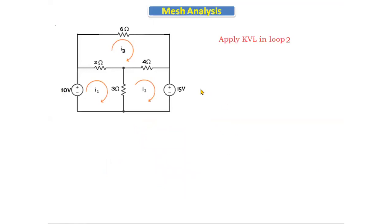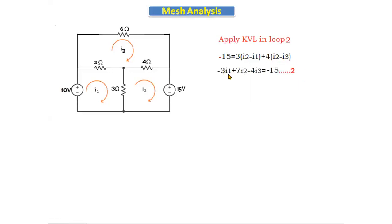Applying KVL in loop two: there is one voltage source, and current enters from the positive terminal, so −15. The 3Ω resistor is common to loops one and two, giving 3·(I2 − I1); the 4Ω resistor is common to loops two and three, giving 4·(I2 − I3). Simplifying: −3·I1 + 7·I2 − 4·I3 = −15. This is equation number two.